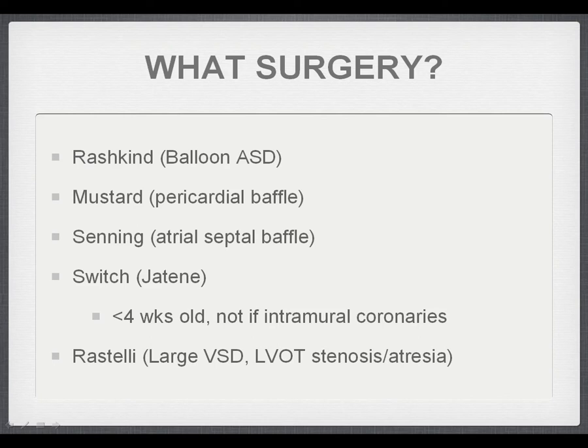The surgery in these patients is complex. All patients are typically placed on prostaglandins early in life to maintain a patent ductus arteriosus and allow venous and arterial mixing. Various procedures are then performed: the Rashkind procedure involves balloon septostomy through the atrial septum. Other operations include the Mustard, Senning, and Jatene procedures, which can be quite complex.